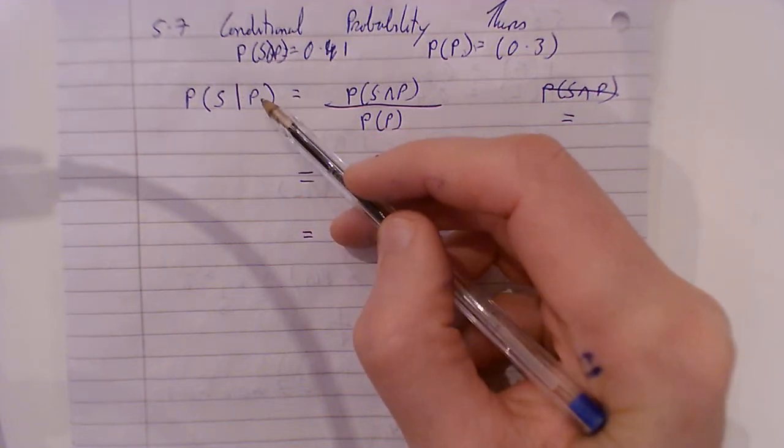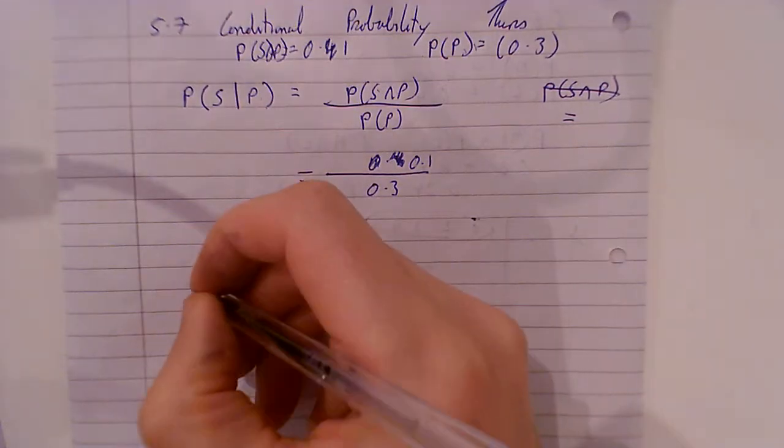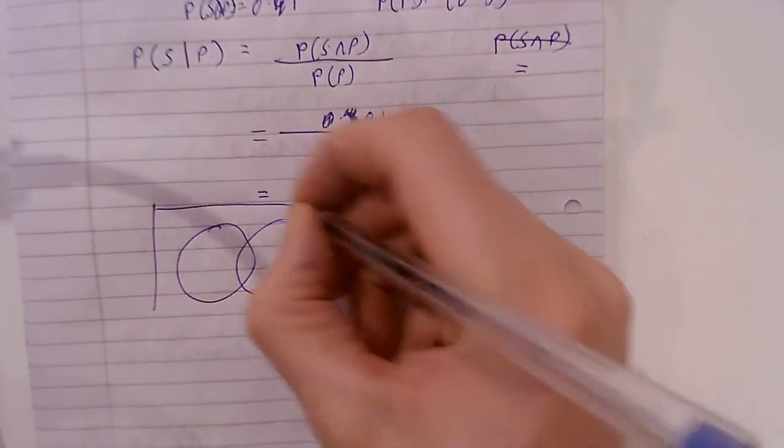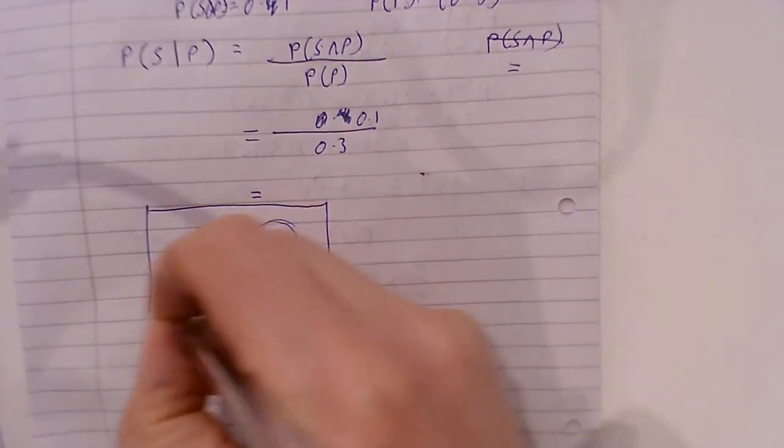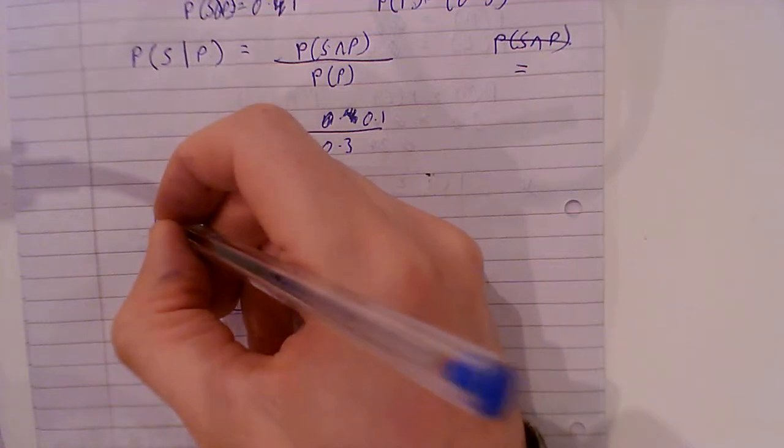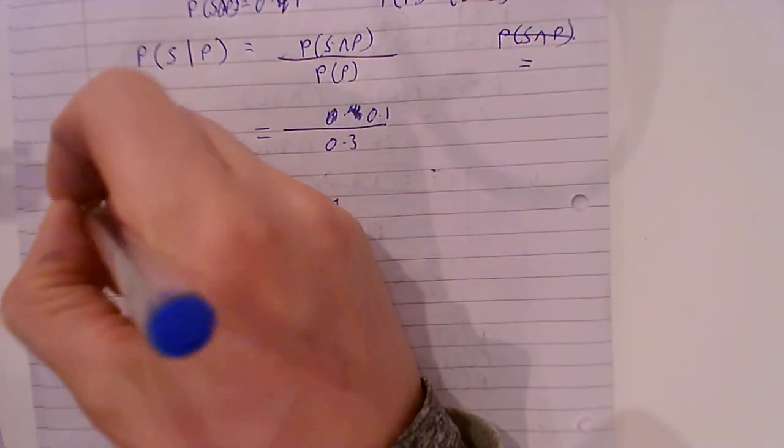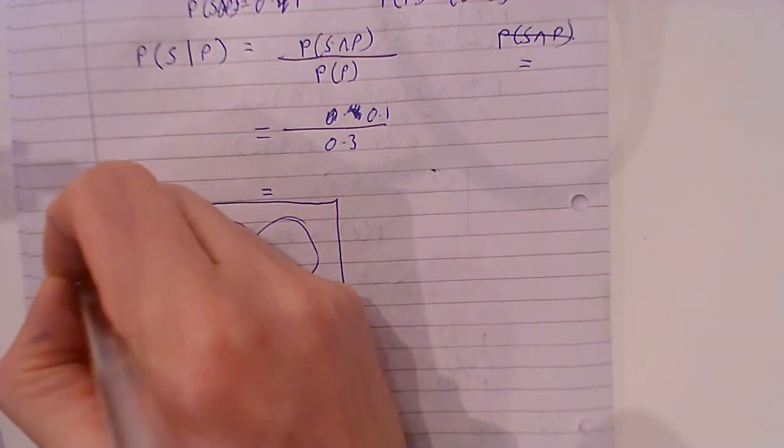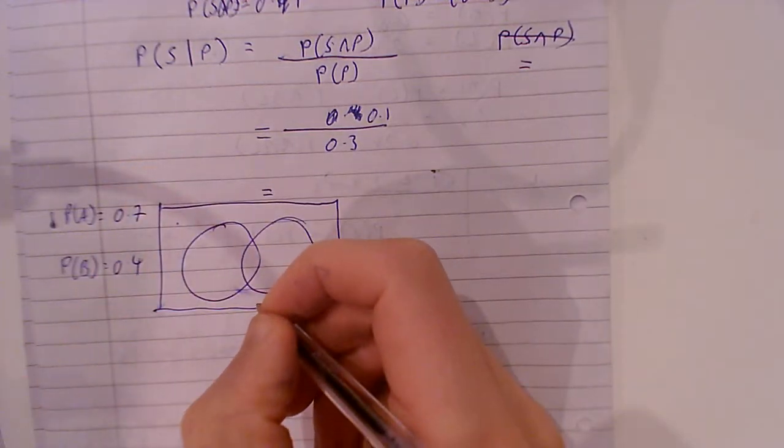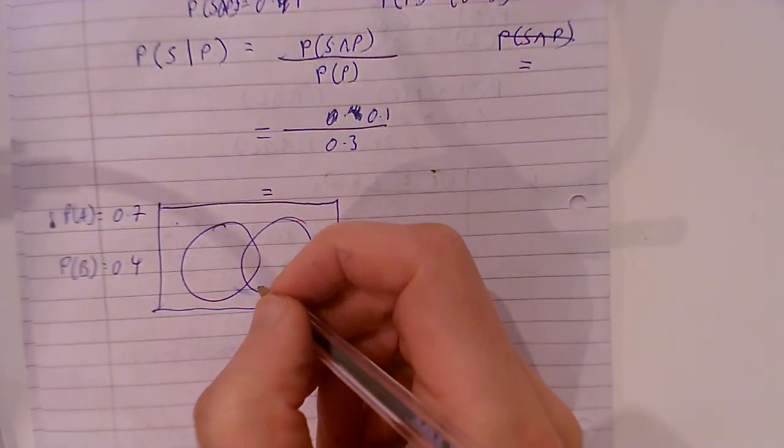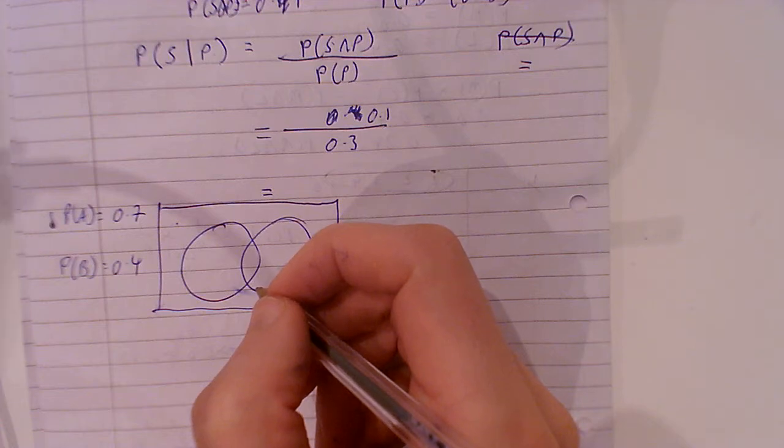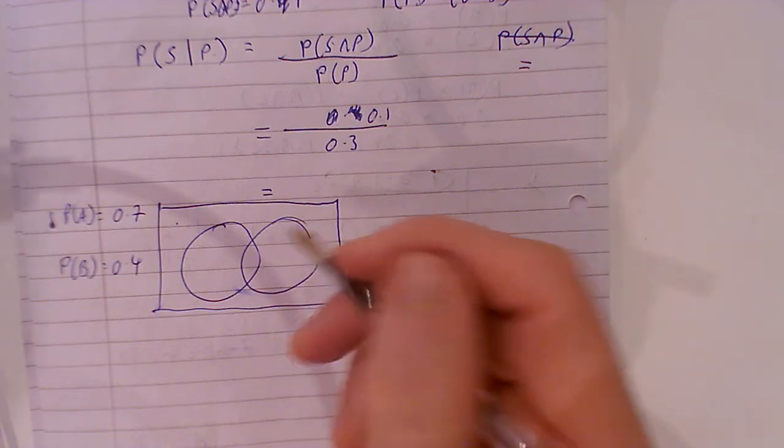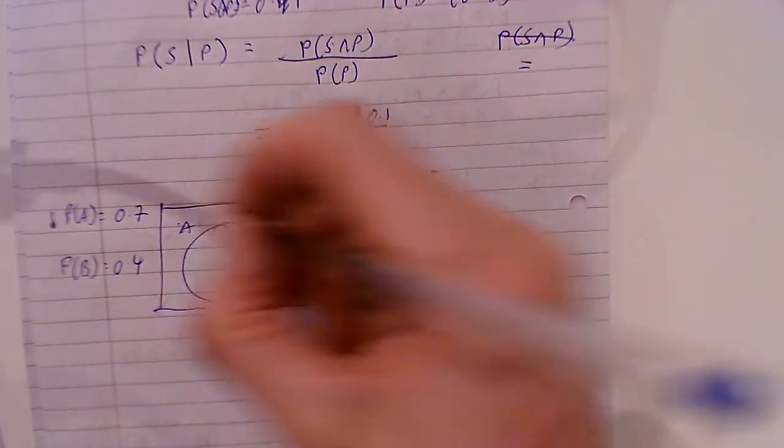Now if I do a different one, let's say we've got a Venn diagram, example four. We know that P(A) is 0.7, P(B) is 0.4. I need to find out what the middle section is. It's not that difficult to find out the middle section, that's P(A∩B).